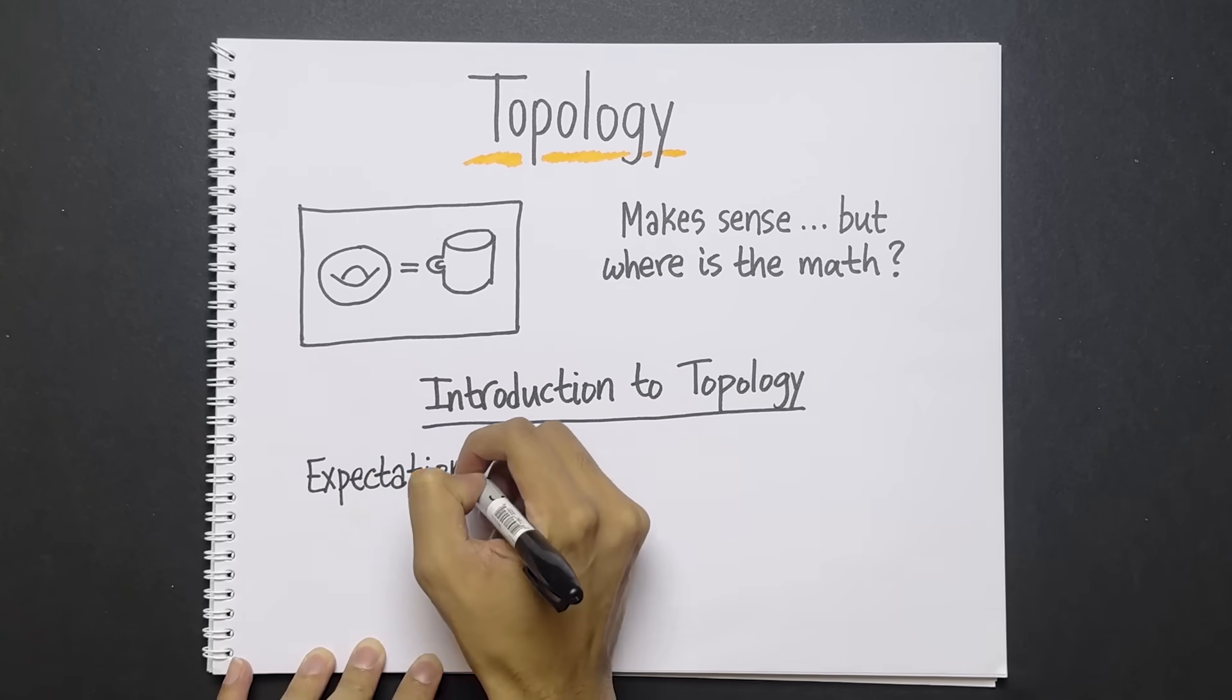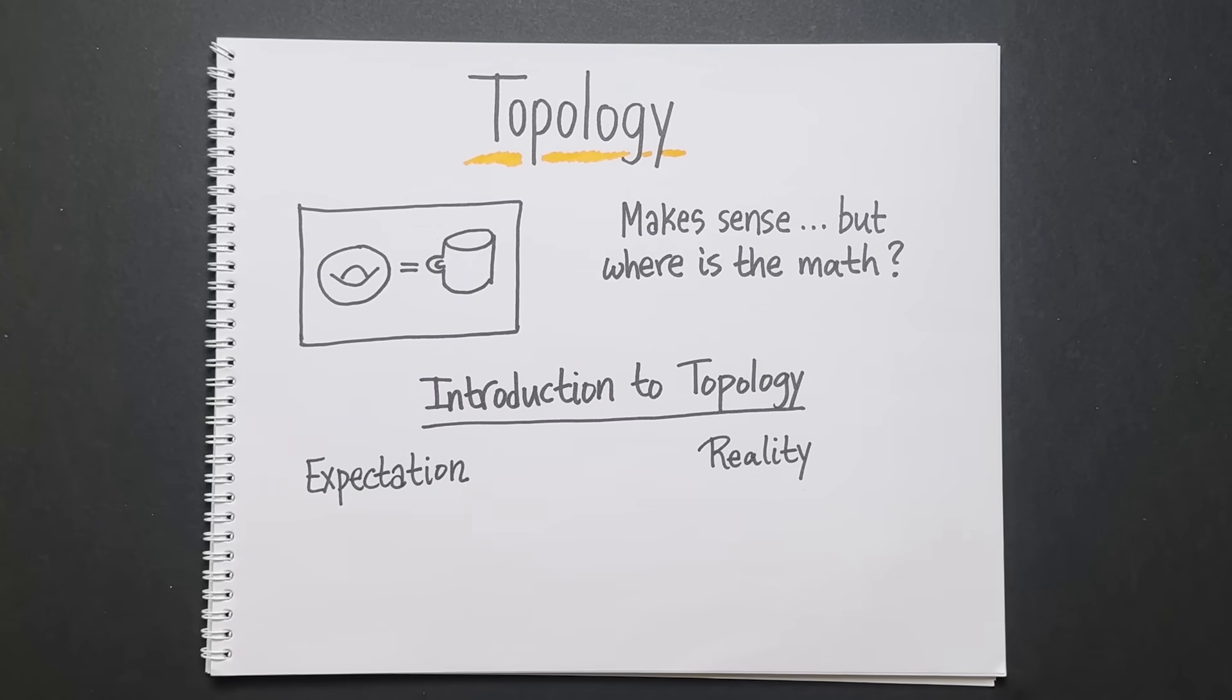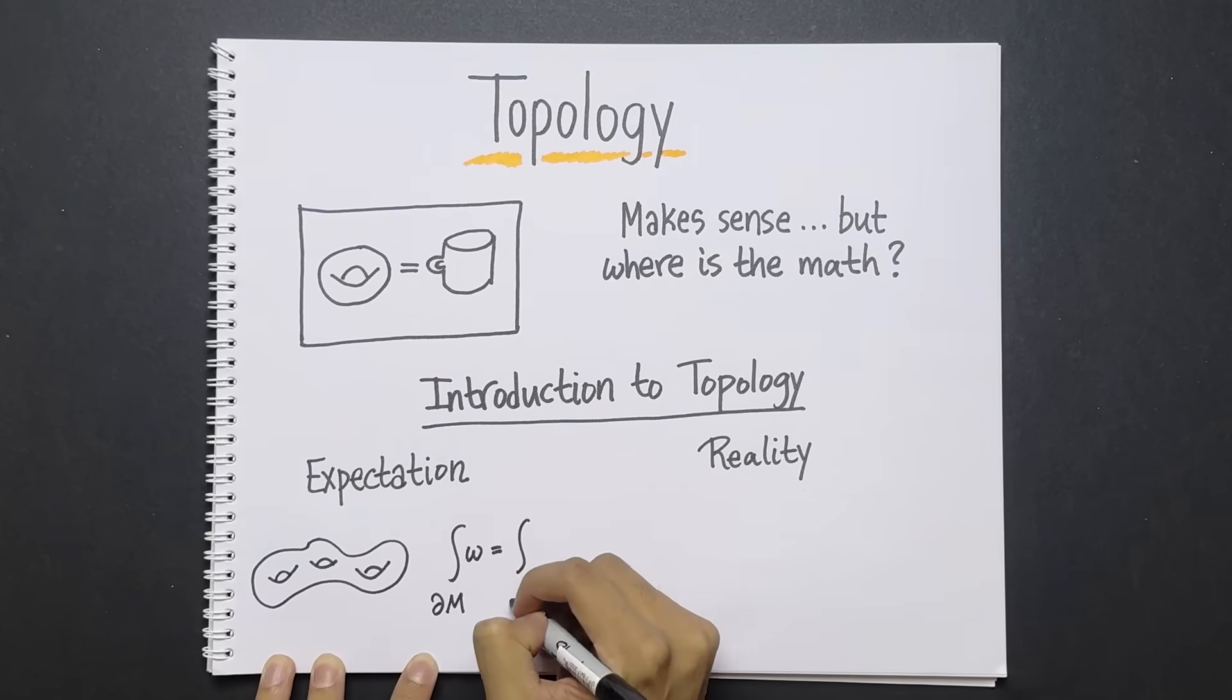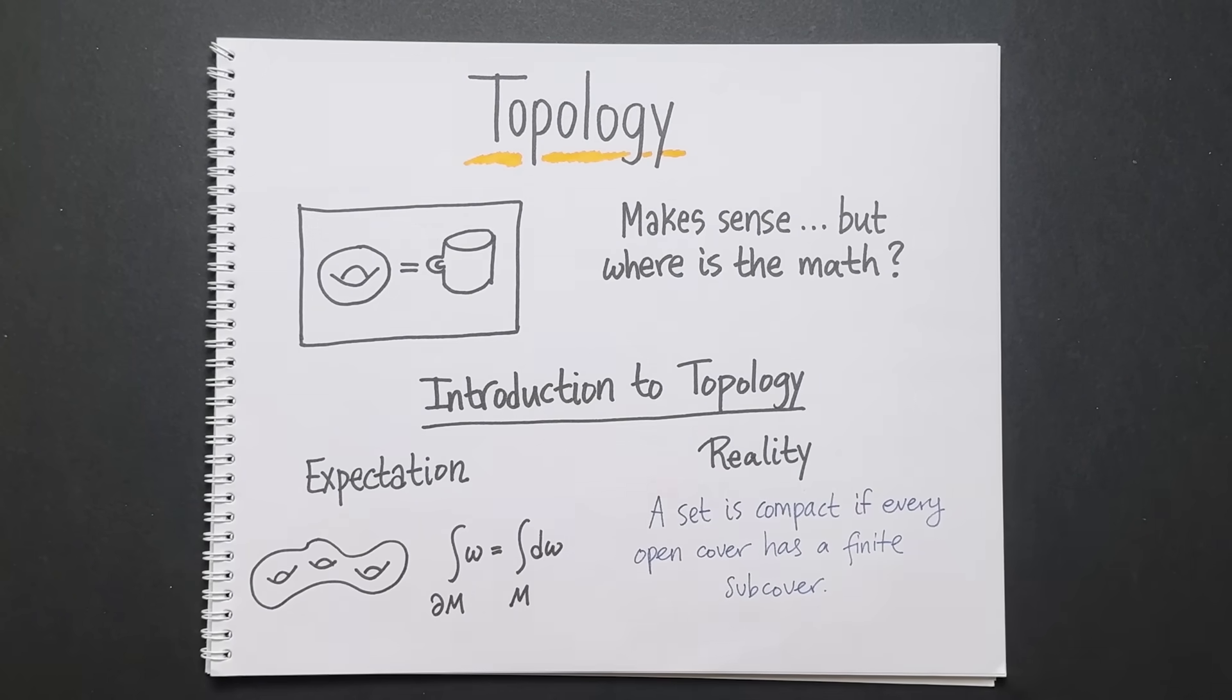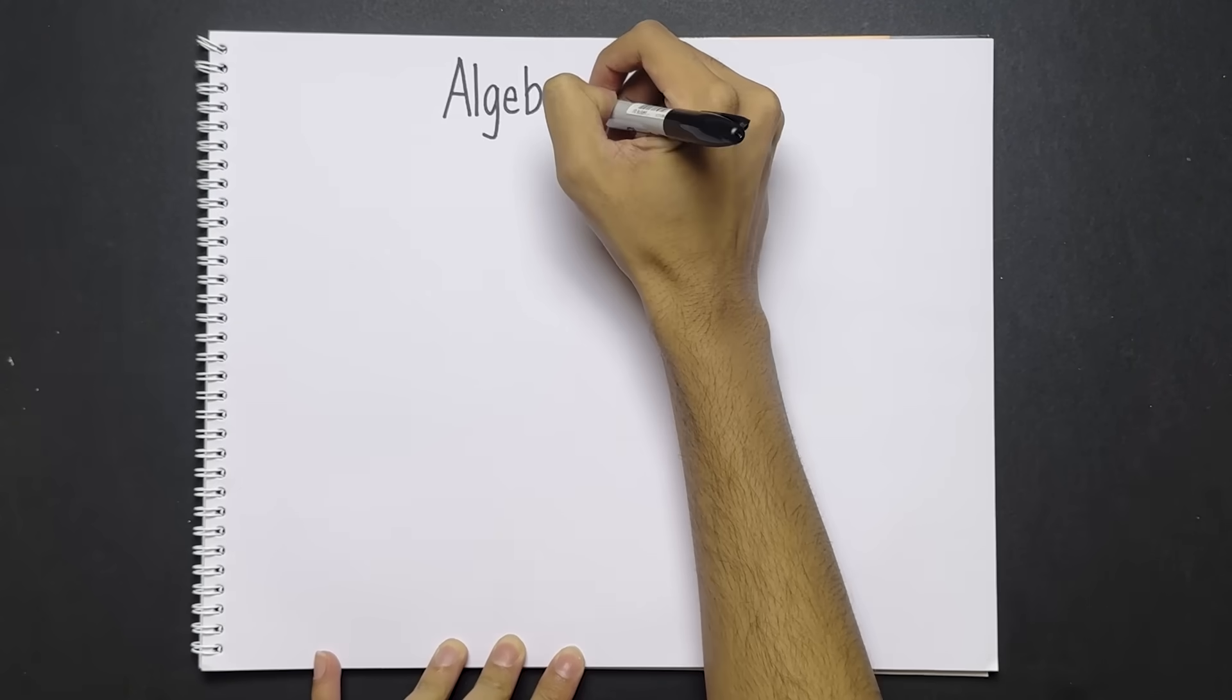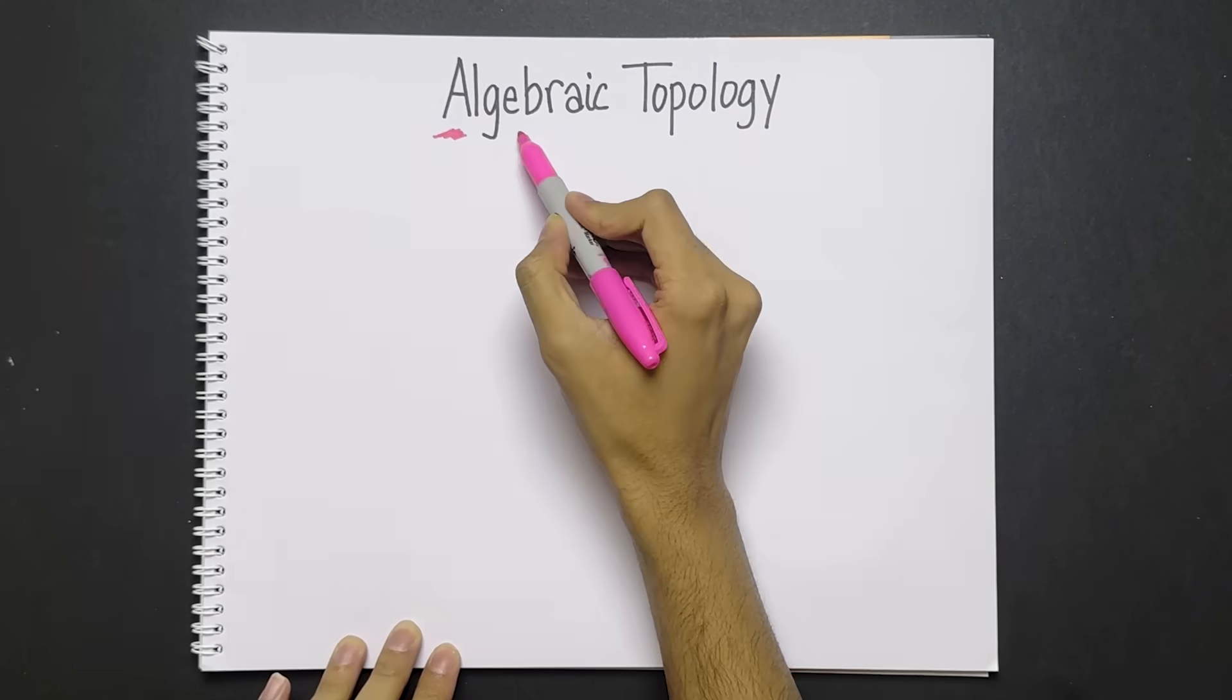I was expecting to learn all these beautiful geometric formulations and concepts, but boy was I disappointed. It was just a bunch of real analysis jargon. Very little about donuts and coffee cups at all. But all of that changed a few years later when I took a course in algebraic topology.